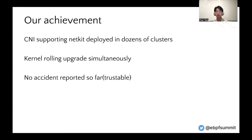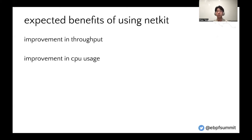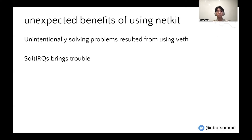I'm confident to say that NetKit is trustworthy. Now let's talk about the benefits of using NetKit. First, we have the expected benefits: improvements in throughput and savings in CPU usage — but those have been discussed before, so we'll skip that part. We also have some unexpected benefits, because NetKit unintentionally solves problems resulting from using veth. All these problems are related to software interrupts in the veth backlog queue, and since NetKit eliminates software interrupts, we don't have these problems anymore.